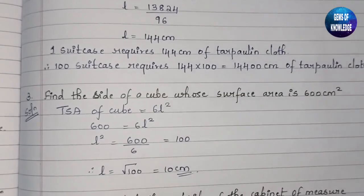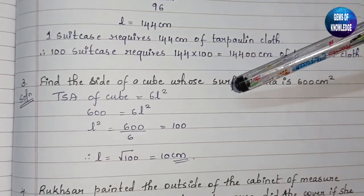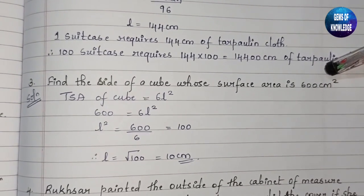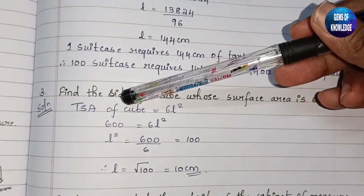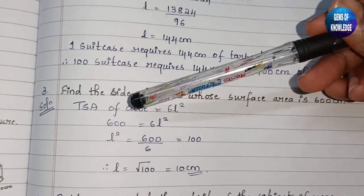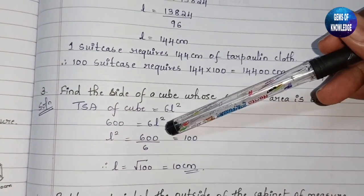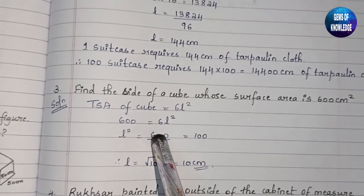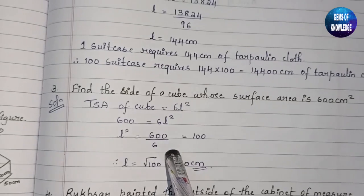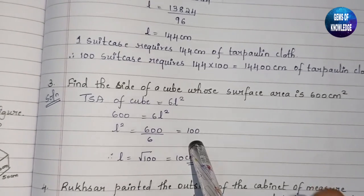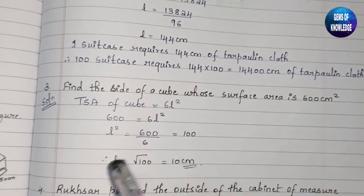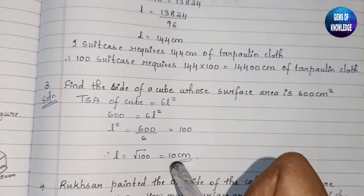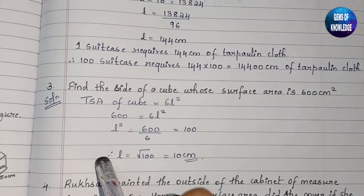Next question: find the side of a cube whose surface area is 600 cm². TSA of cube = 6l². So 600 = 6l², which gives l² = 600 ÷ 6 = 100. Therefore l = √100 = 10 cm. The length of the side of the cube is 10 cm.